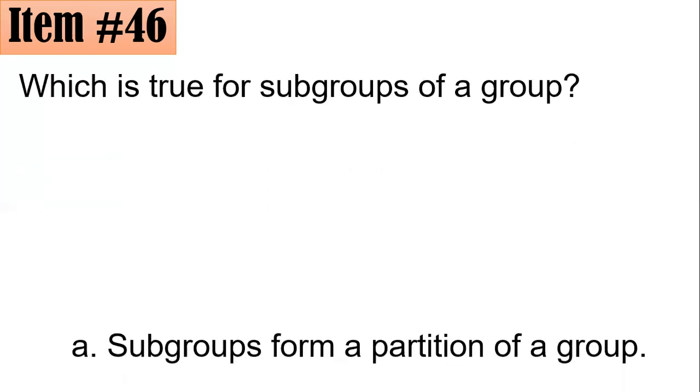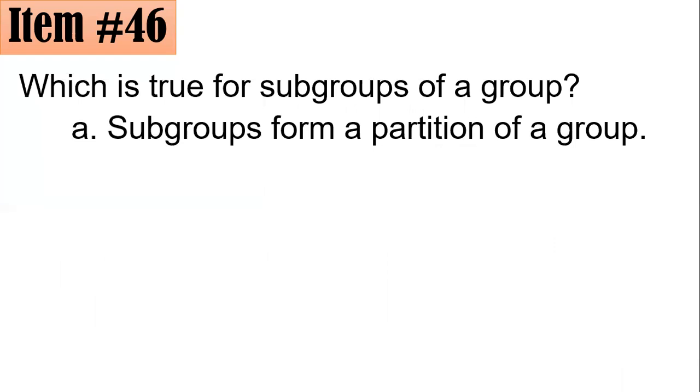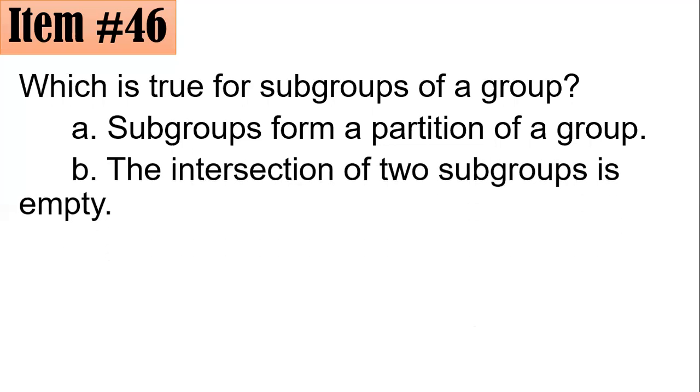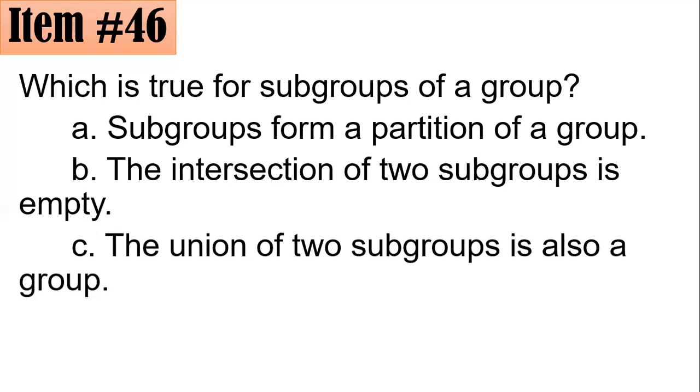Remember this. A, subgroups form a partition of a group is in fact incorrect. Why? Because when we speak about partition, then these subgroups should be mutually exclusive. But the fact that it's important that each of them has an identity element, then therefore they do not form a partition because they have an intersection. The intersection of two subgroups is empty. It's also false because they should have at least one element, which is the identity element. So the intersection of two subgroups is never empty. The union of two subgroups is also a group. This is in fact false. It is possible that if you take their union, then the union will not be a group because sometimes closure is not satisfied.